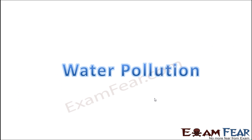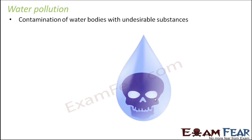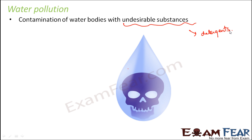With water, there is also contamination by unwanted materials, which is polluting the water. Water pollution is the contamination of water bodies with undesirable substances. These substances could be detergents, which are partially soluble in water but are strong chemicals, as well as insecticides or pesticides, which are often used in cultivation to increase crop yield.